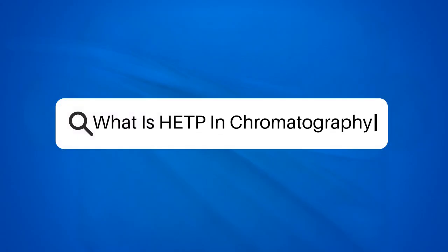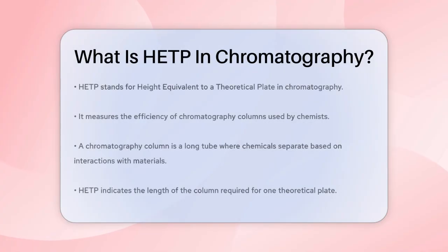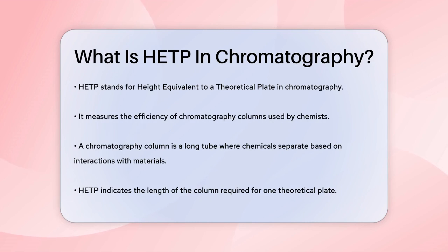What is HETP in chromatography? Have you ever wondered how chemists measure the efficiency of their chromatography columns? The answer lies in a concept called the Height Equivalent to a Theoretical Plate, or HETP. Imagine a chromatography column as a long, narrow tube where chemicals separate based on their interactions with the column's materials.